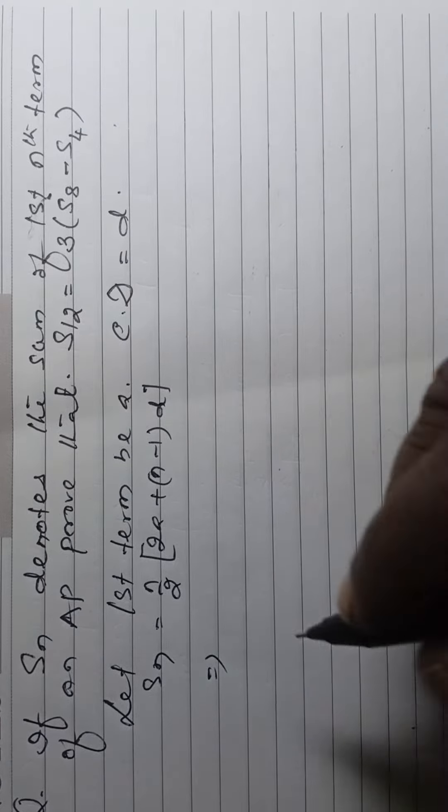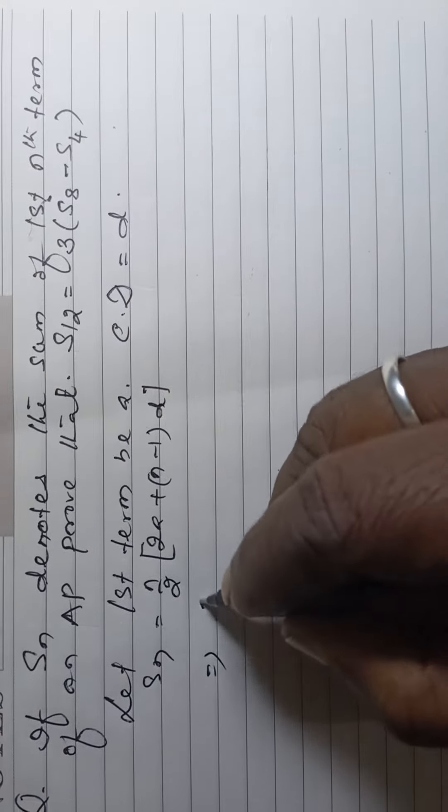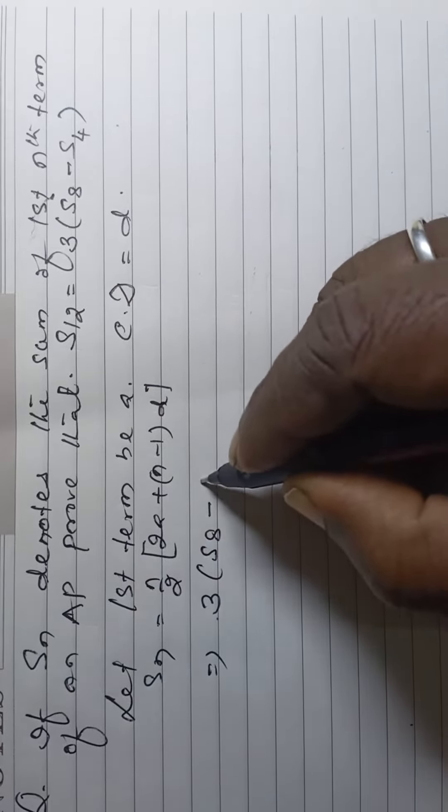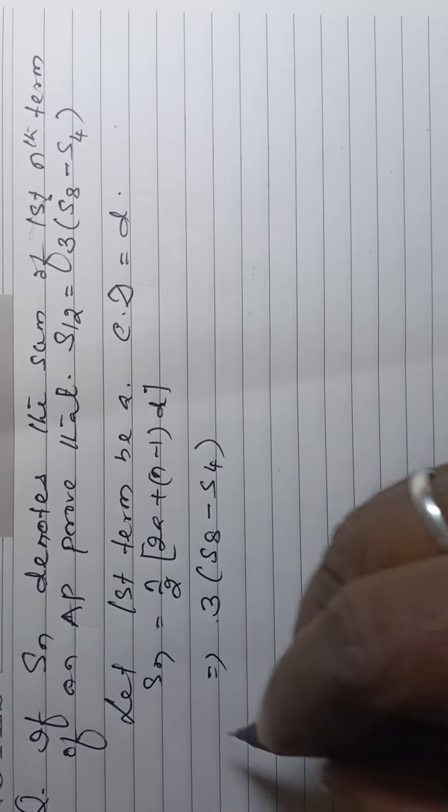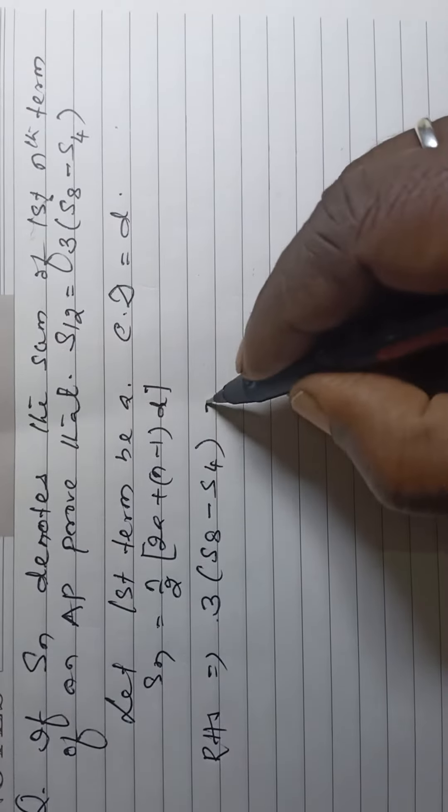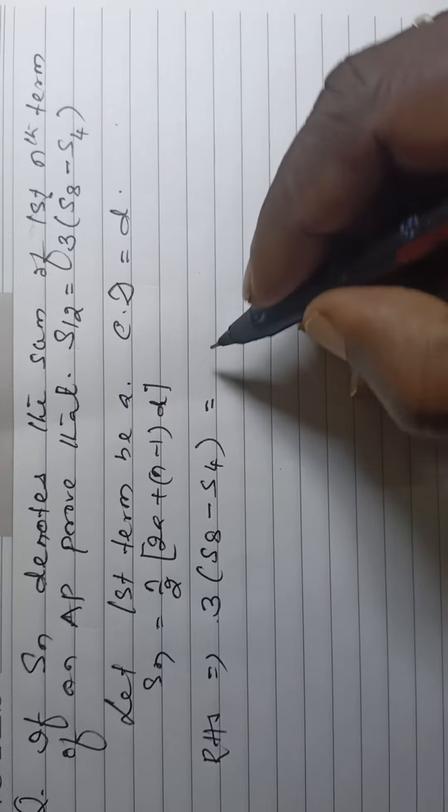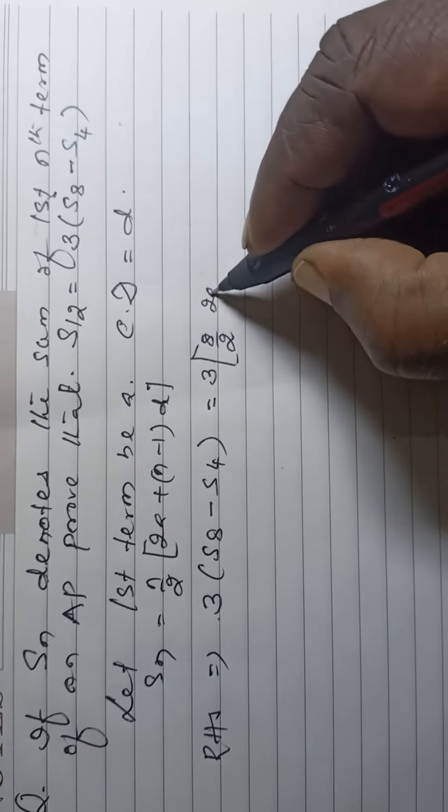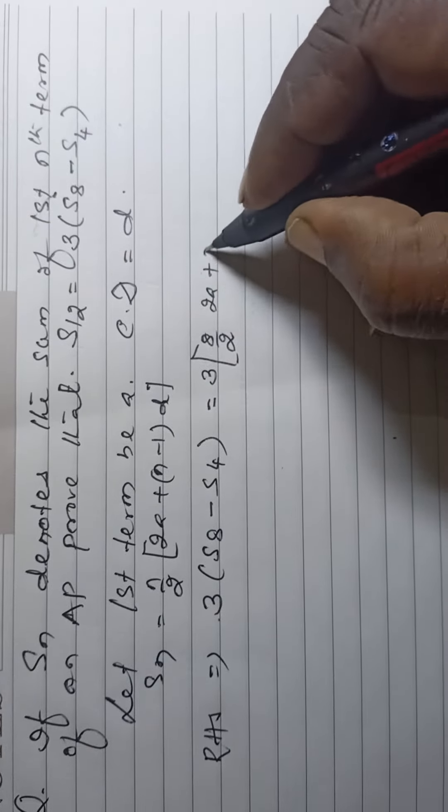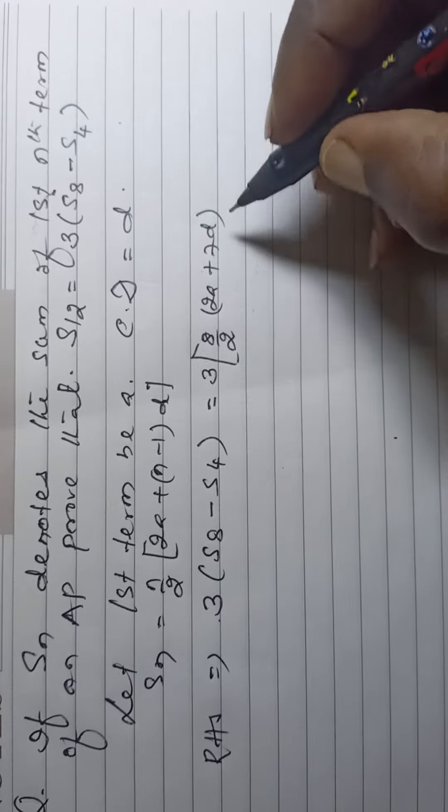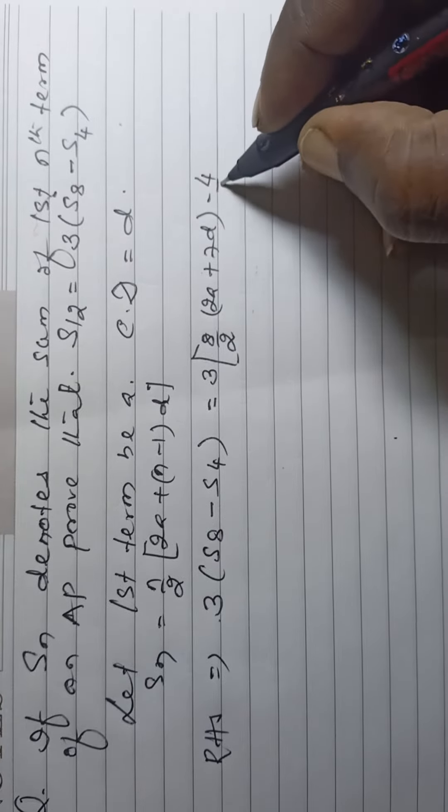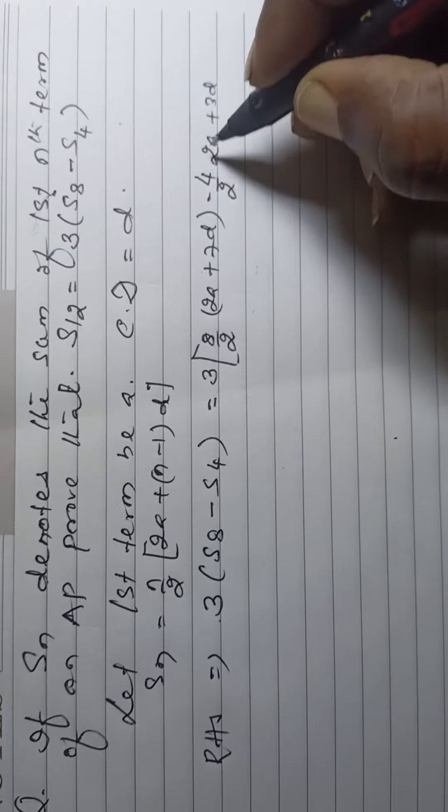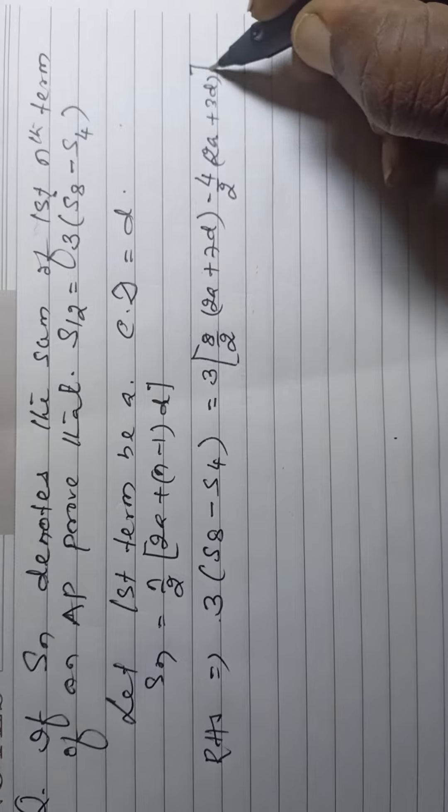Now this is 3 times S8 minus S4, the right hand side, is equal to 3 into 8 by 2, 2A plus 7D bracket, minus 4 by 2, 2A plus 3D here.